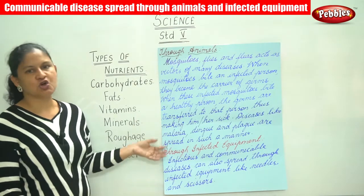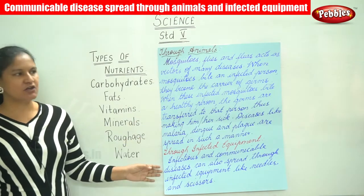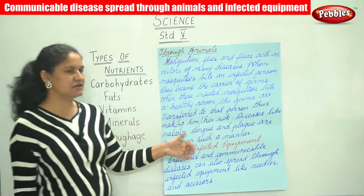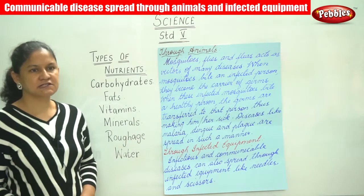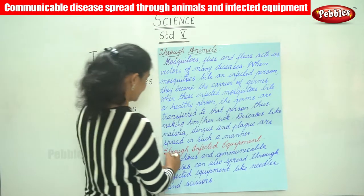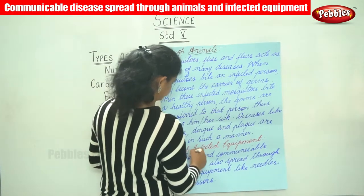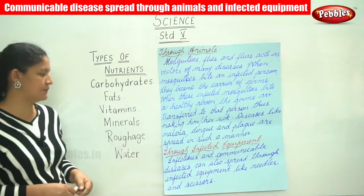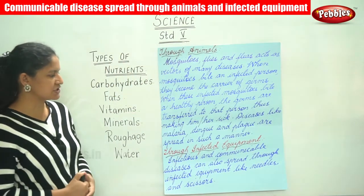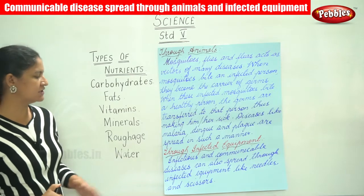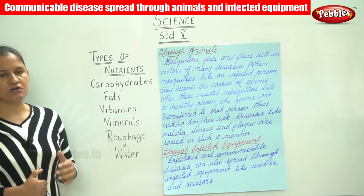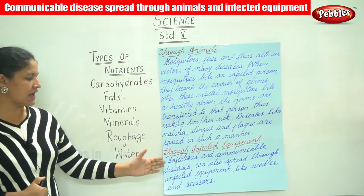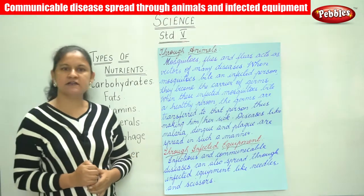Diseases like malaria, dengue, and plague are spread in such a manner. Next is spread through infected equipment. Infectious and communicable diseases can also spread through infected equipment like needles and scissors.